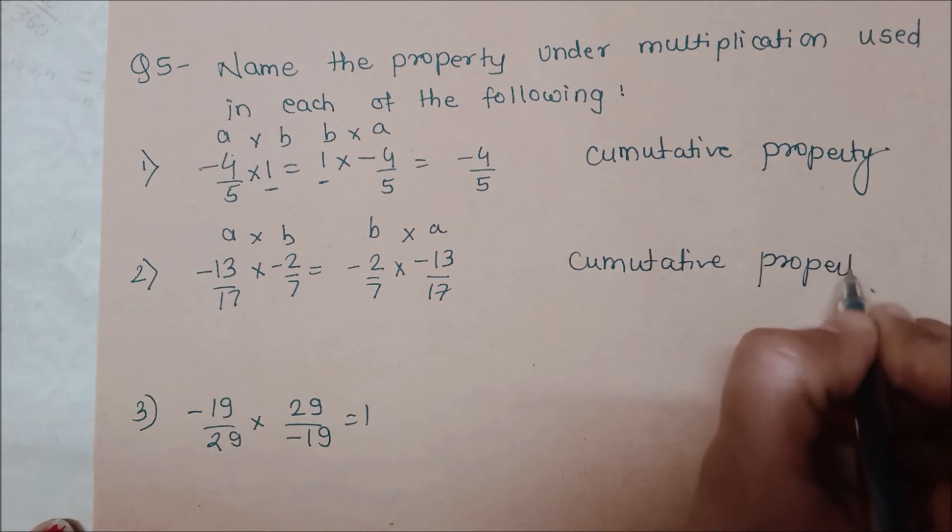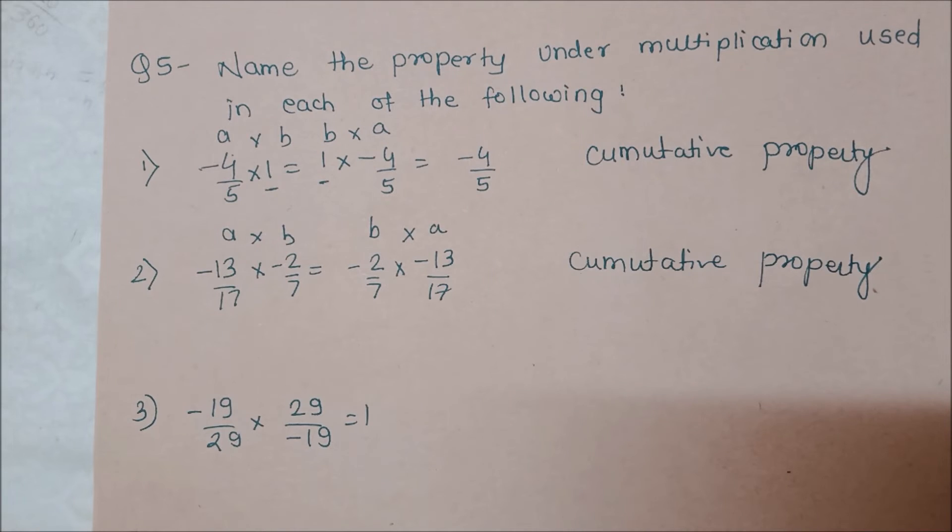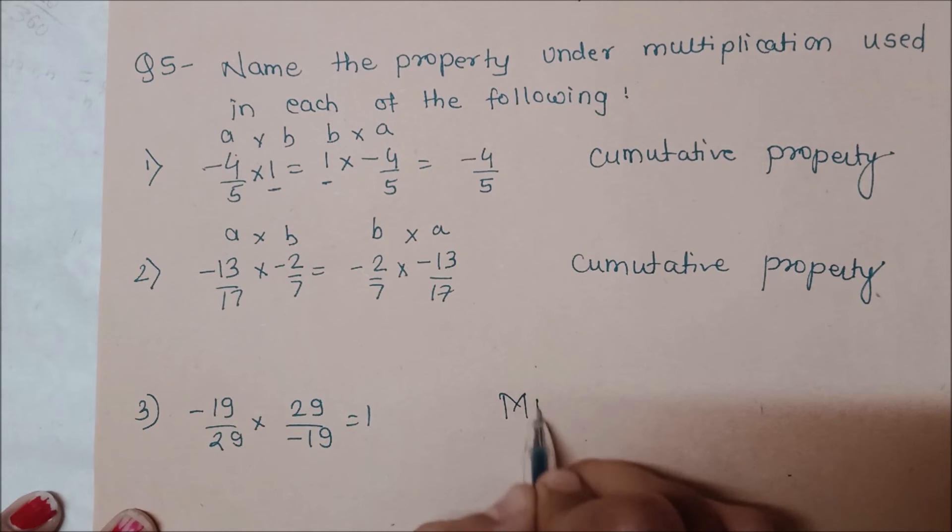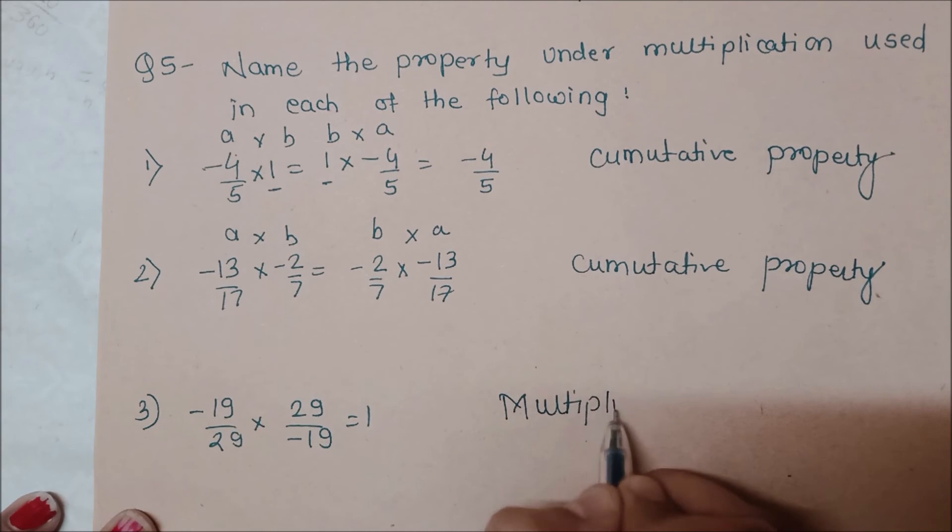And last, we have given minus 19 upon 29 into 29 upon minus 19. What is happening? They are multiplying to give 1. So this is the multiplicative inverse. The fraction and its reciprocal, if you multiply them, you will get 1 as an answer. Here we have multiplicative inverse property.